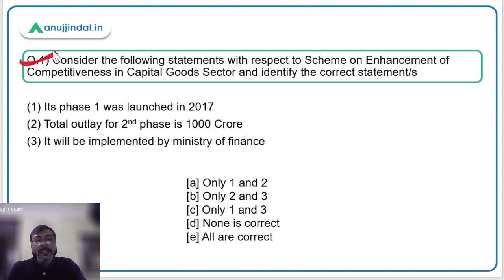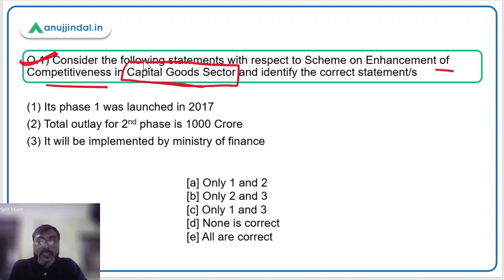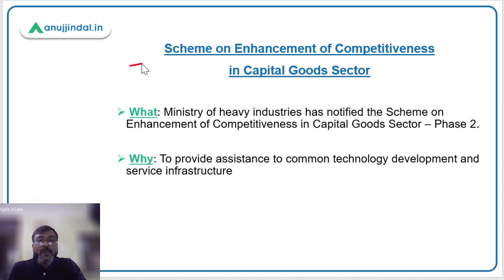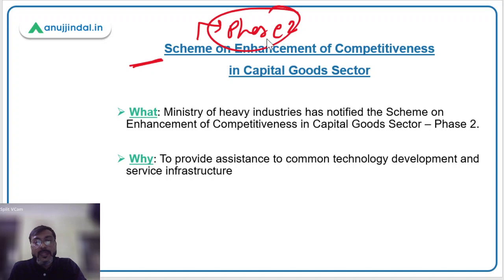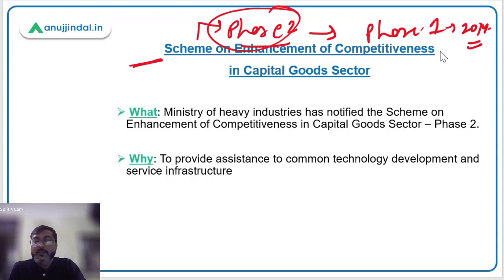The first question is based on a scheme. Consider the following statements with respect to the Scheme on Enhancement of Competitiveness in Capital Goods Sector, launched to enhance the capital goods sector. You have to identify the correct statement. Remember, this is not a new scheme — its Phase 2 has been launched. Phase 1 was launched in the year 2014.